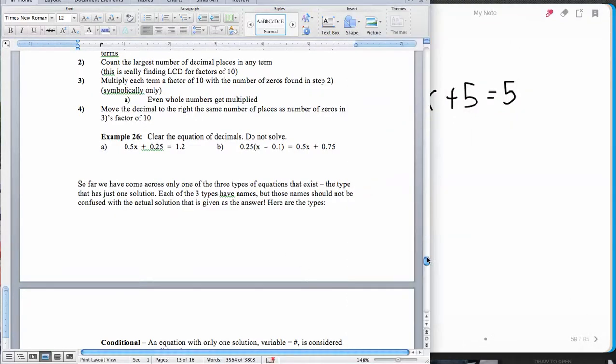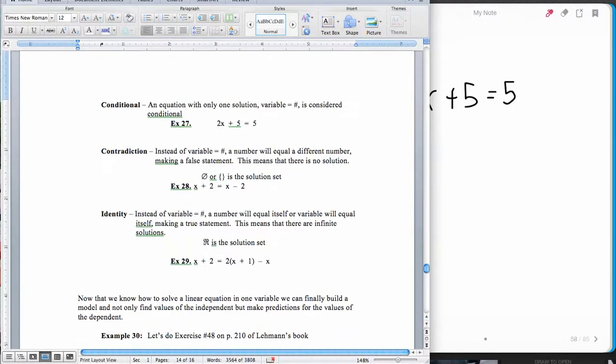What we need to talk about now is the fact that there are three different types of equations. We have a type of equation called conditional equations, contradictions, and identities. Conditional equations are equations that give us an answer, an x equals a number. There's one single solution that satisfies the equation. A contradiction is a type of equation that gives you a false statement, and there is no number that will satisfy these. There's no solution or the solution set is a null set. And then finally, the identity is a type of equation where everything will satisfy the equation, every real number. It gives us a true statement when we go to solve these.